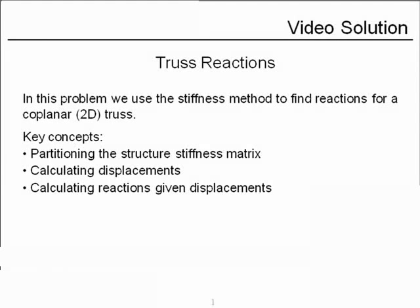In this example problem, we're going to use the stiffness method, and we'll use it to find reactions for a coplanar, that is, a 2D truss. The key concepts we'll use are partitioning the structure stiffness matrix, calculating displacements for a truss, and calculating reactions given those displacements.